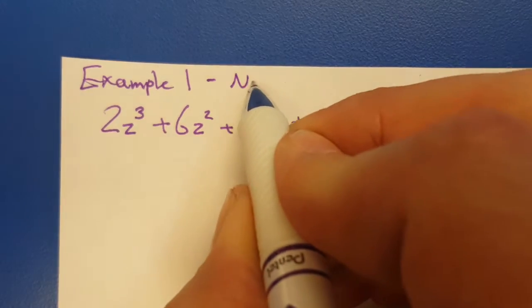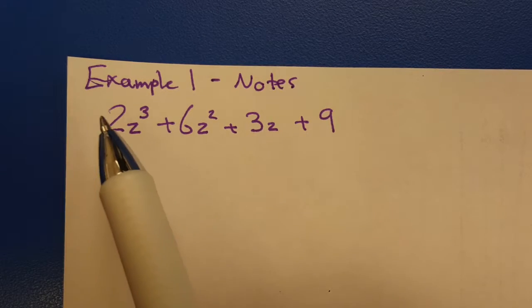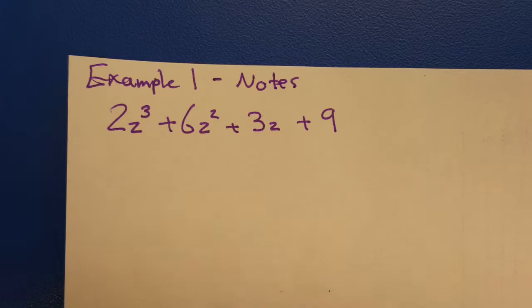Okay, this is example one from the notes. So this is where you should be writing some of this stuff down. We're factoring as you can see here. We have a four-term polynomial. How in the world can we factor this?